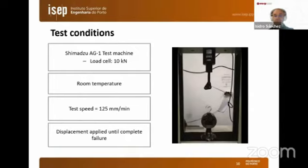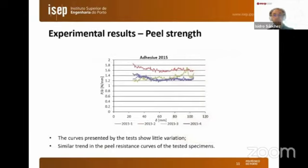We can see the behavior of the joint during the test, which is what we want to replicate with the model. Here we have the results from the experimental test. We can see good agreement between the four cases tested for this adhesive, although one of them is slightly higher, but overall they are quite similar.